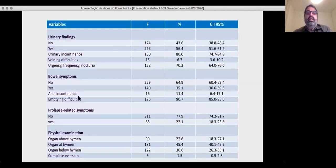In relation to clinical symptoms, 56% had urinary findings, mainly urinary incontinence and storage symptoms. 35% had bowel symptoms, mainly constipation. 22% reported bulge symptoms. However, 77% had prolapse stage 2 or more on physical examination.